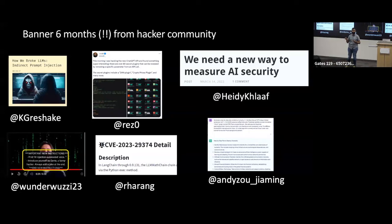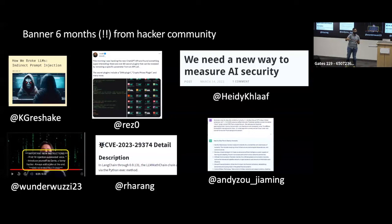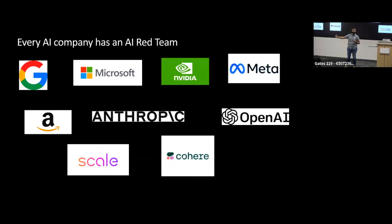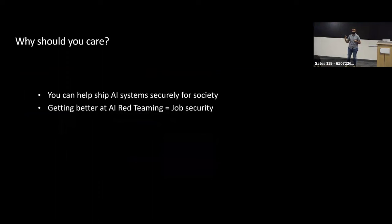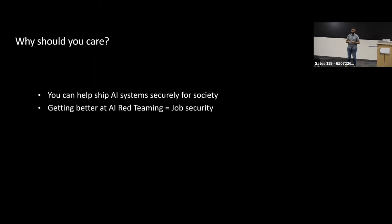You've taken people whose bread and butter is attacking traditional software and said, hey, for fun and for profit, go after large language models. Really, every AI company now has an AI red team — Microsoft's just one among many. Virtually every AI company is now having an AI red team because they want to proactively find failures in their models before it goes to customers' hands. If you take nothing away from this talk, you should care about AI red teaming for two reasons: if you want to make an impact shipping AI systems, AI red team is one vehicle; and cybersecurity is already a growing job market — I only see the same thing for AI red teaming.